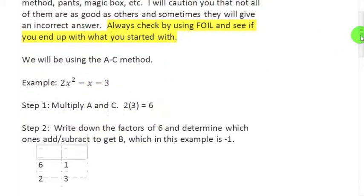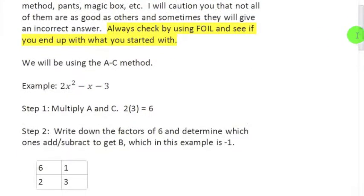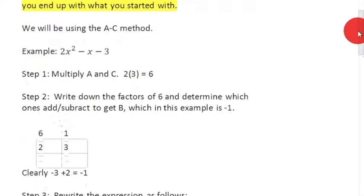What I want to do is make sure that, first of all, checking when we're done, you go back and check by using FOIL and see if you get what you started with. That should be a part of everyone's method. You always go back and check to see if you got what you started with. If you don't, then you made a mistake.